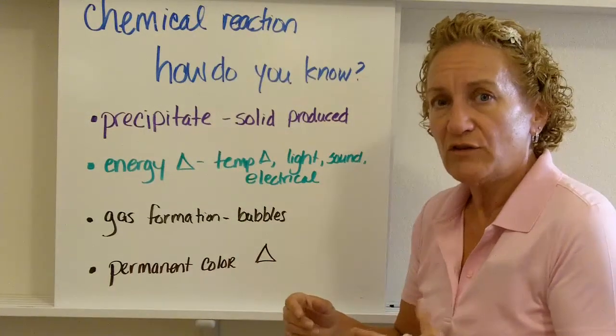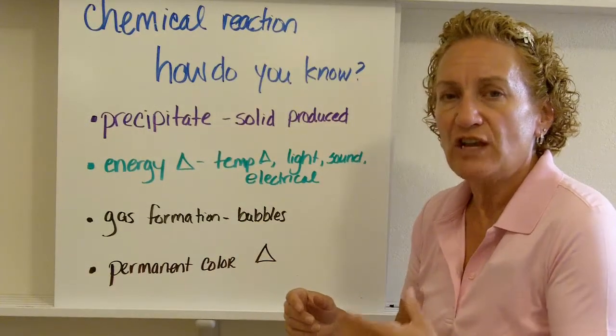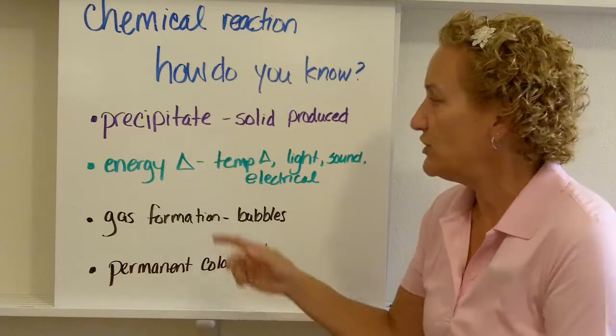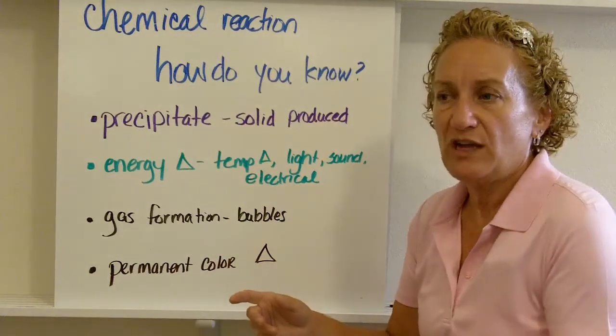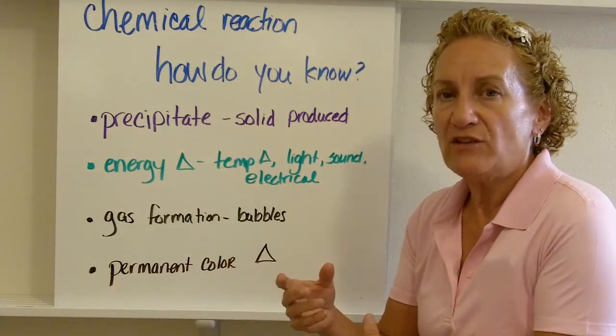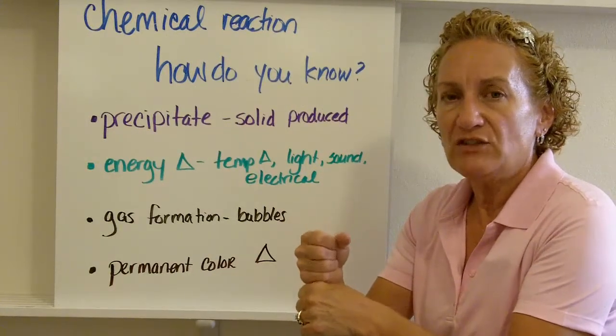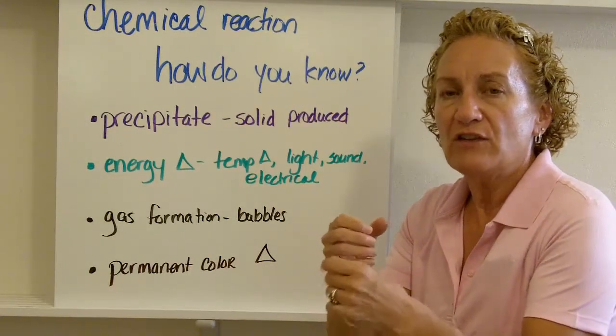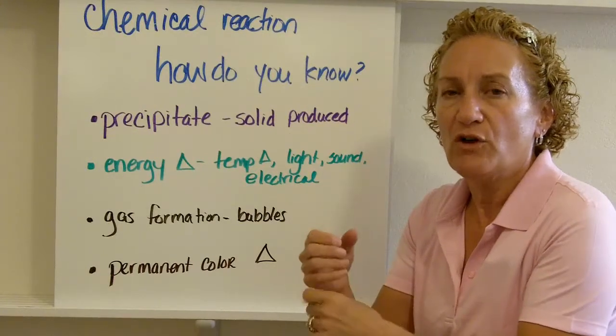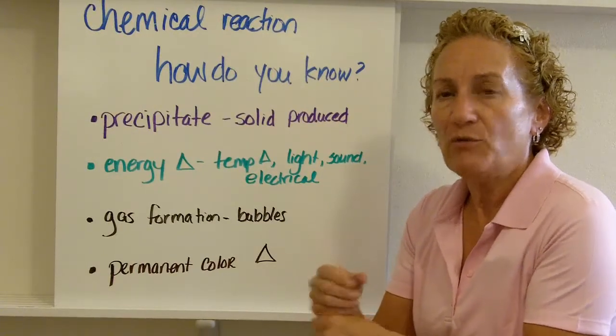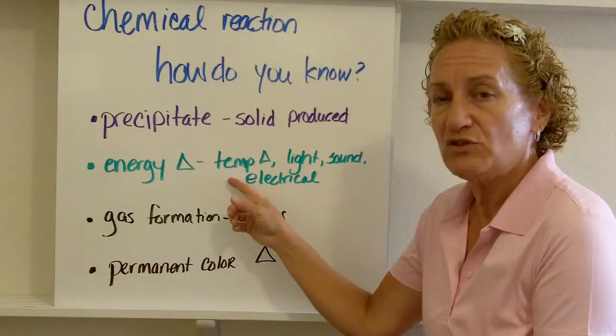Second thing you can look for is energy change. Now by energy change, the most common way that we see energy change is with a temperature change. You may look at a chemical reaction and not be able to visually see anything. But if you wrap your hands around the test tube, you'll find that that solution got either colder or hotter. And that tells you that a chemical reaction has occurred. You have a temperature change.